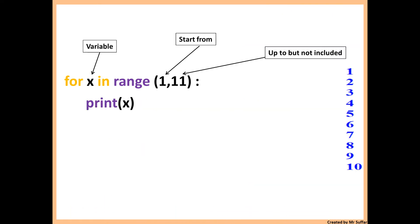Here we have for x in range 1 to 11. This is when you want x to be a specific number. x will start from 1 and it will go up to 10. We put 1, 11 because the last number does not count. 11 is up to 11, but not including 11.